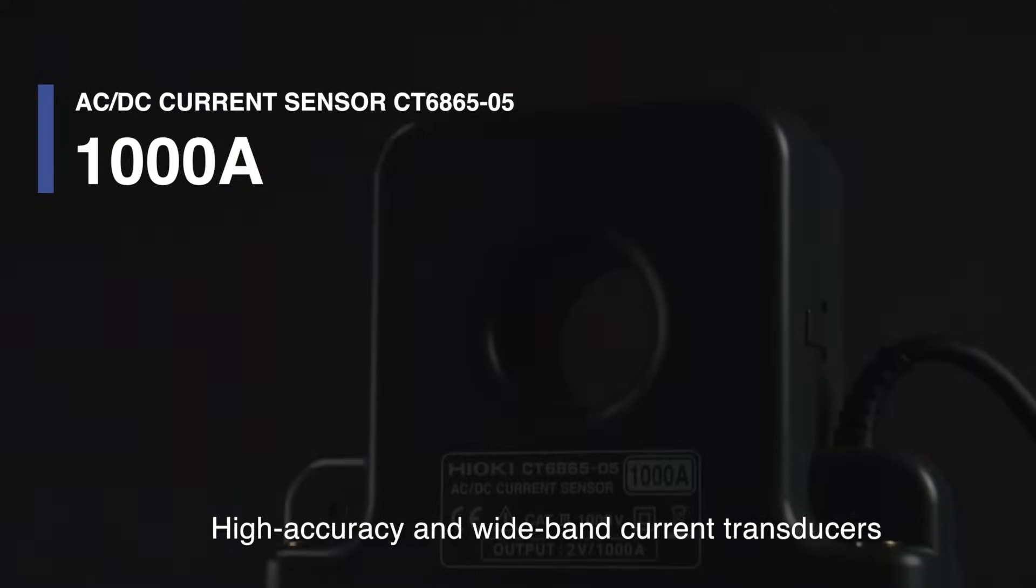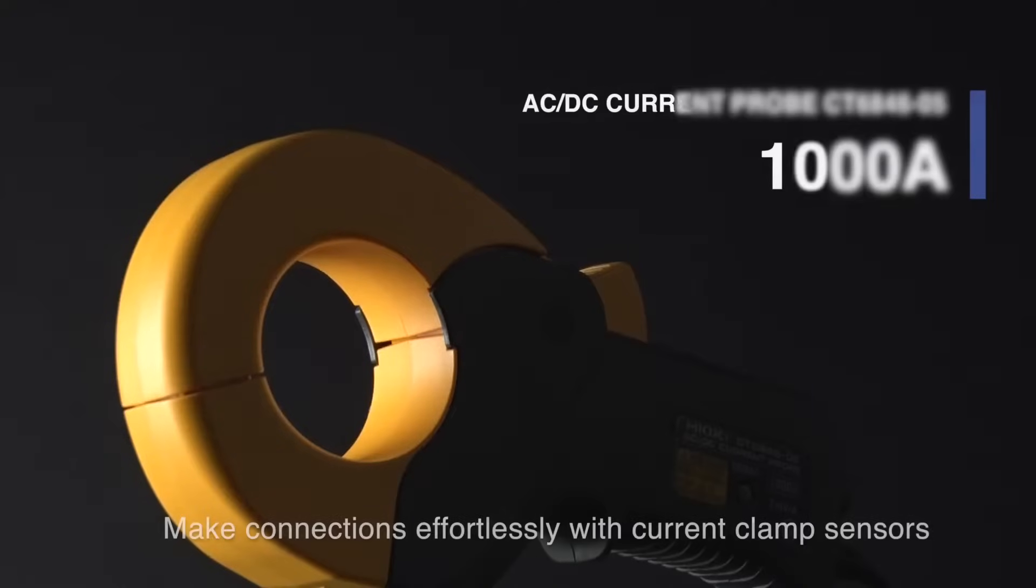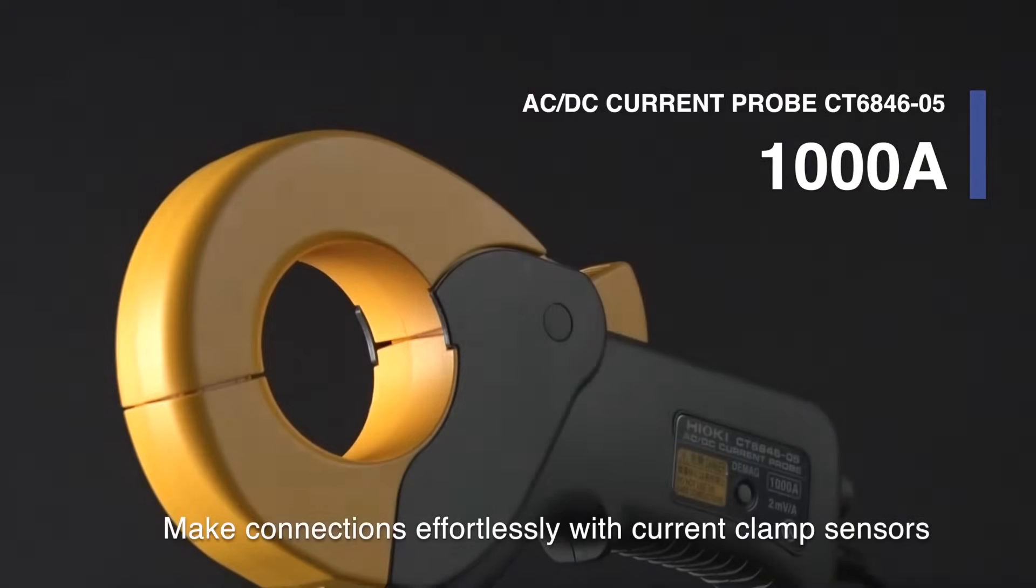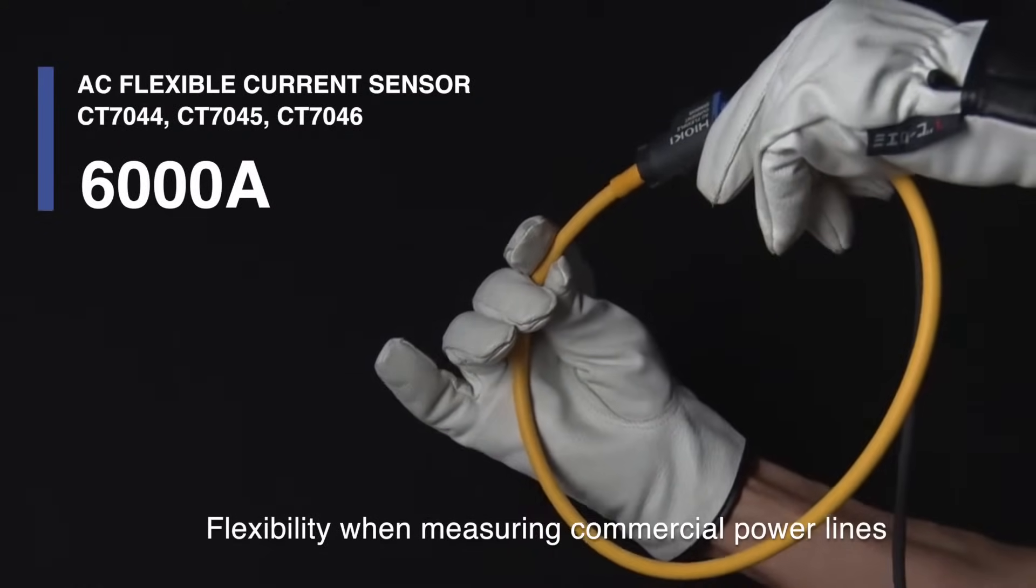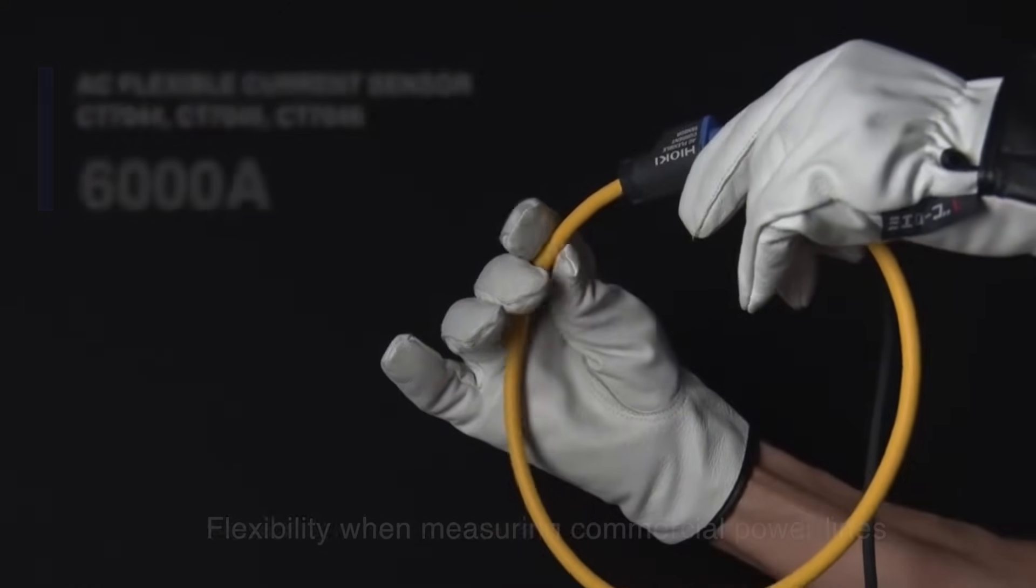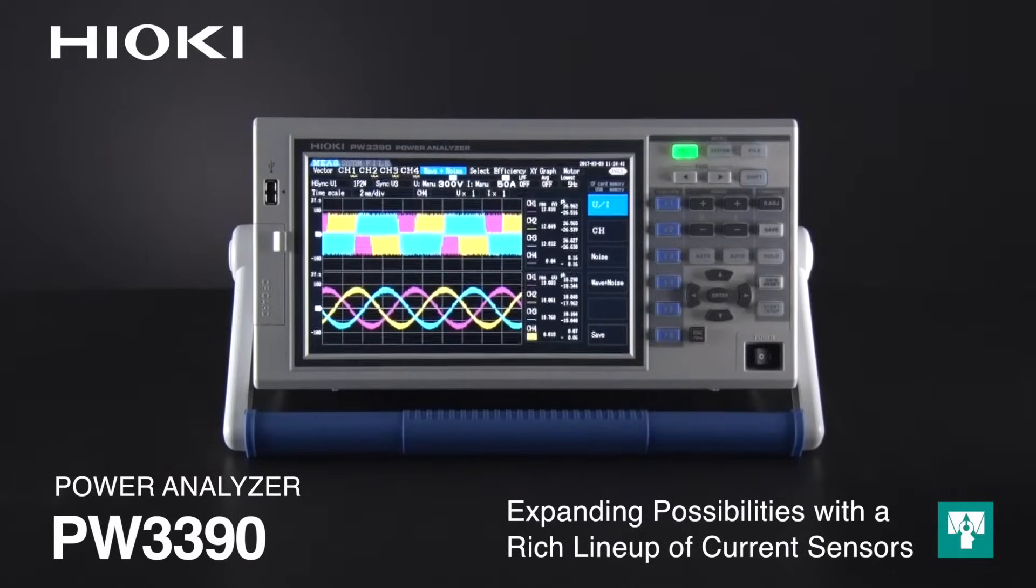Achieve high accuracy and wide band testing with current transducers. Make connections effortlessly with current clamp sensors. Have ultimate flexibility when measuring commercial power lines. Introducing the Hioki PW3390 Power Analyzer, expanding possibilities with a rich lineup of current sensors.